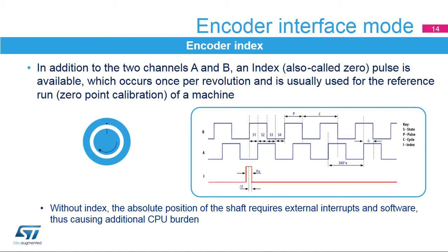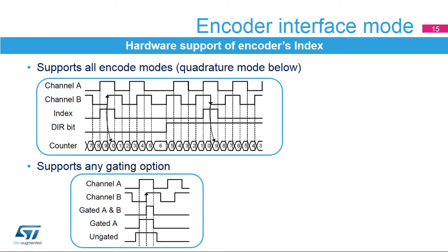Incremental encoders do not provide a reference position, while absolute encoders provide an index signal indicating an absolute reference position. The counter can be reset by the index signal connected to the TIM_XETR input and filtered using the digital input filter. An encoder with index has three outputs — A, B, and index — where the index is asserted once per revolution. Without an explicit index, software is needed to calculate it, causing additional CPU burden. The index feature is supported in all encoder modes: quadrature, clock-plus-direction, and directional clock.